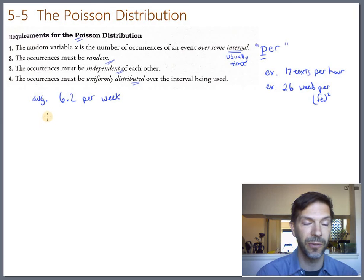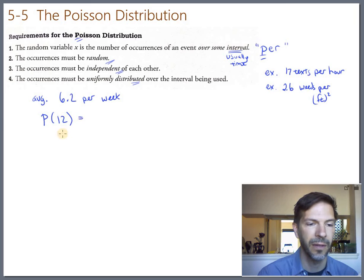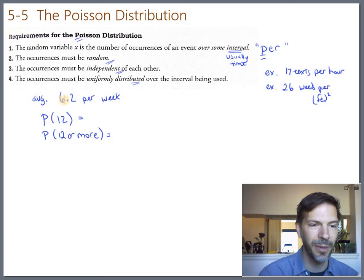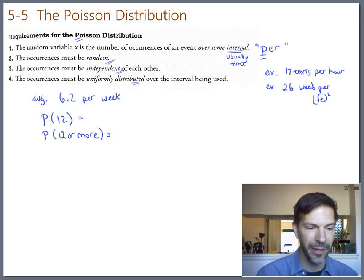The question was, a certain week they ended up seeing 12. What's the chance of that? Is that an indication that the migration has started or is that just a randomly high week? So if the average is 6.2 per week, what's the probability of getting 12? And then maybe just for practice, let's also talk about the probability of 12 or more. Remember this 6.2 per week and then 12 and 12 or more.